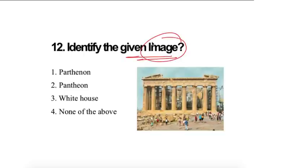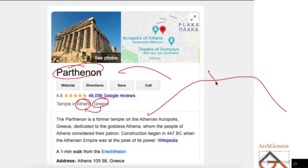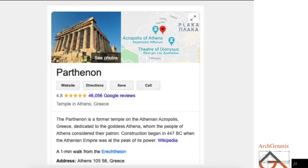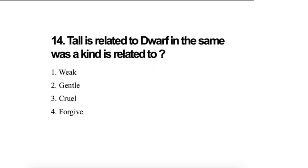Identify the given image. It is the Parthenon, located in Greece. And Greece's capital is Athens. So there is a hill and the hill is located here, and the hill name is Acropolis. Identify the given image. It is Colosseum, Roman Colosseum. So it is the place of tall is related to dwarf in the same way kind is related to cruel.